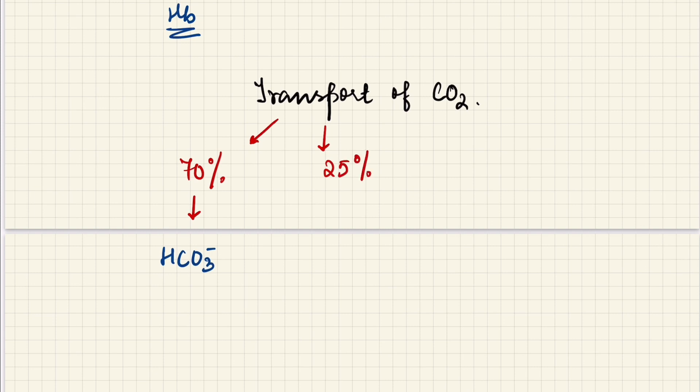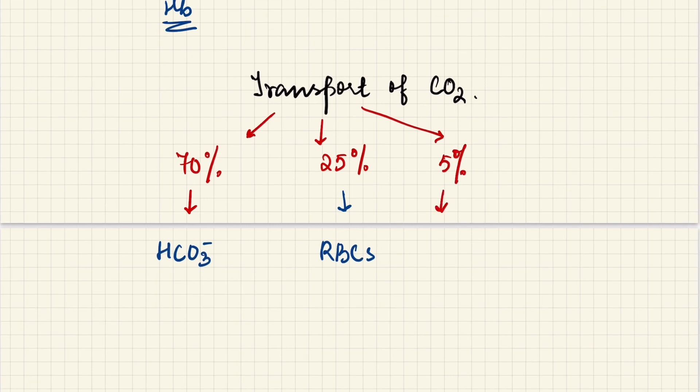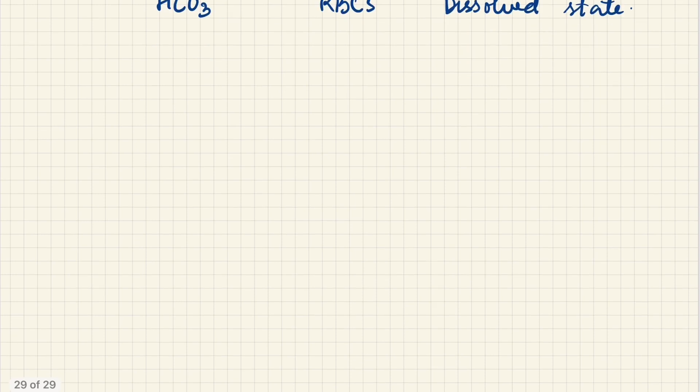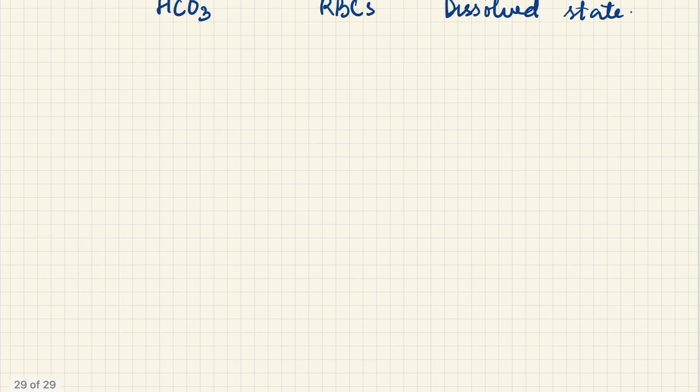And the remaining 5-7% by plasma in a dissolved form. So this is the transport of oxygen and carbon dioxide. Now we have to talk about the transport of oxygen by the hemoglobin.